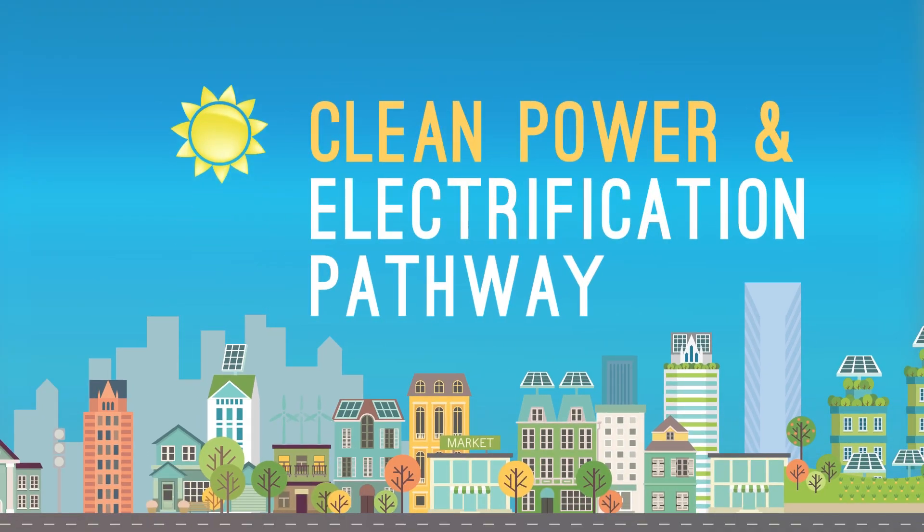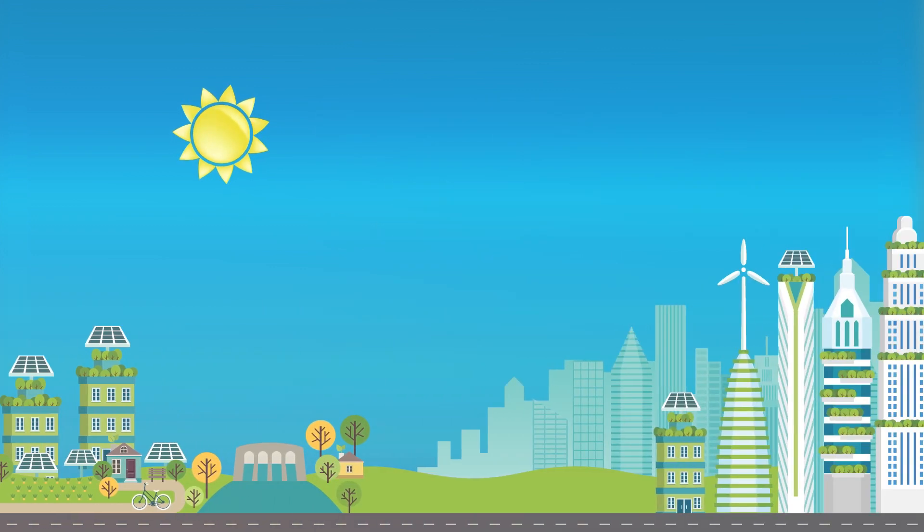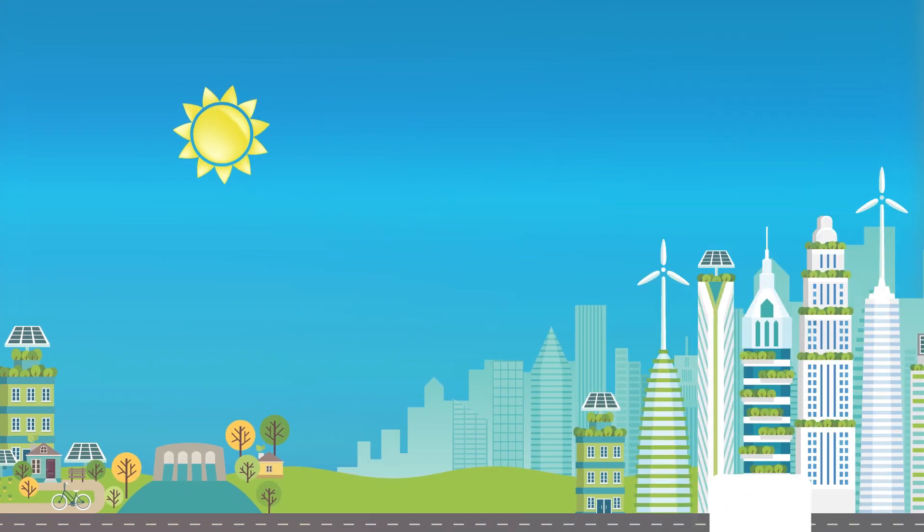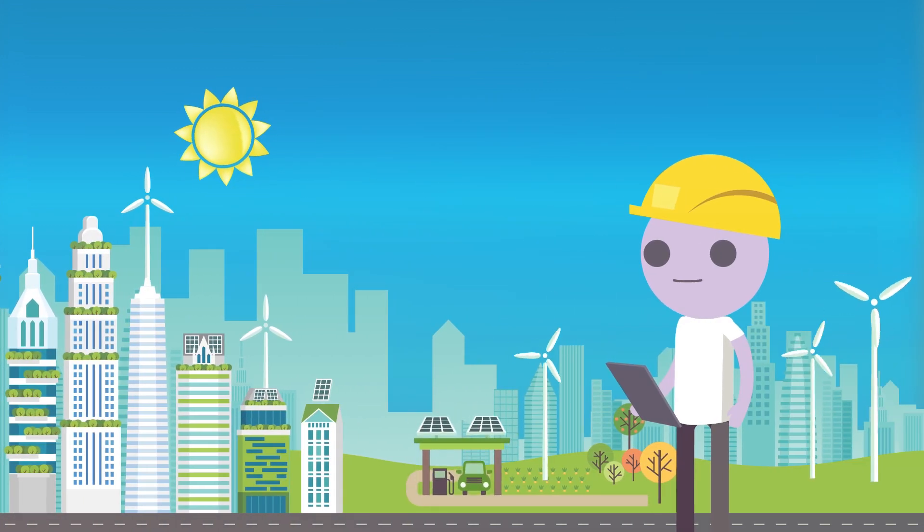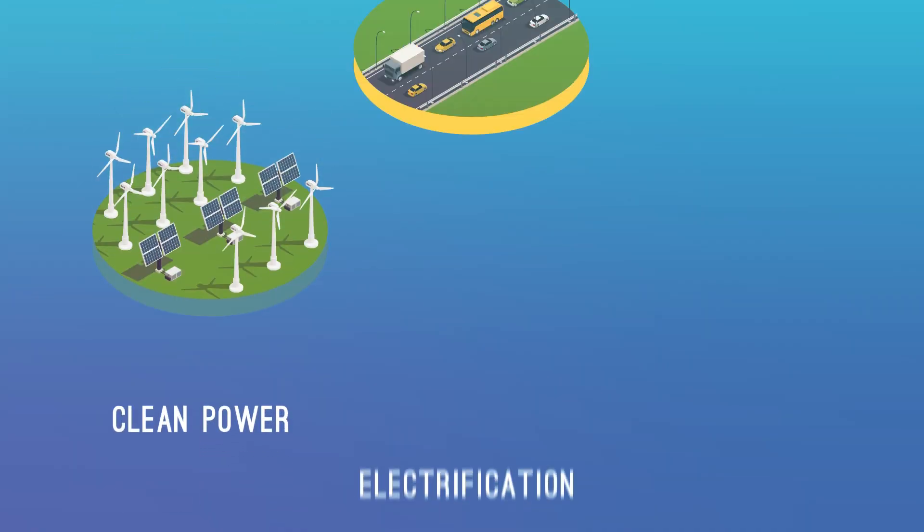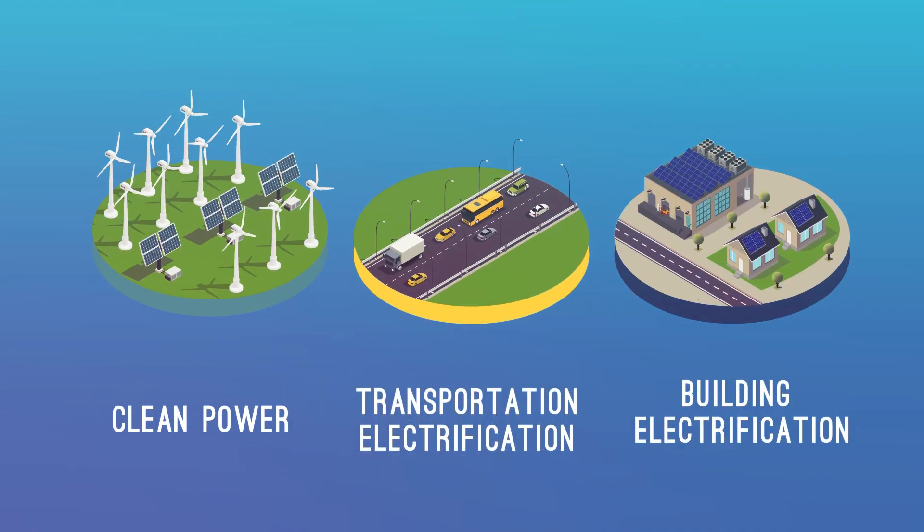The Clean Power and Electrification Pathway is our proposal for California to fight climate change and air pollution at the lowest possible cost while creating skilled jobs for Californians. The pathway is an integrated proposal with three closely linked efforts.